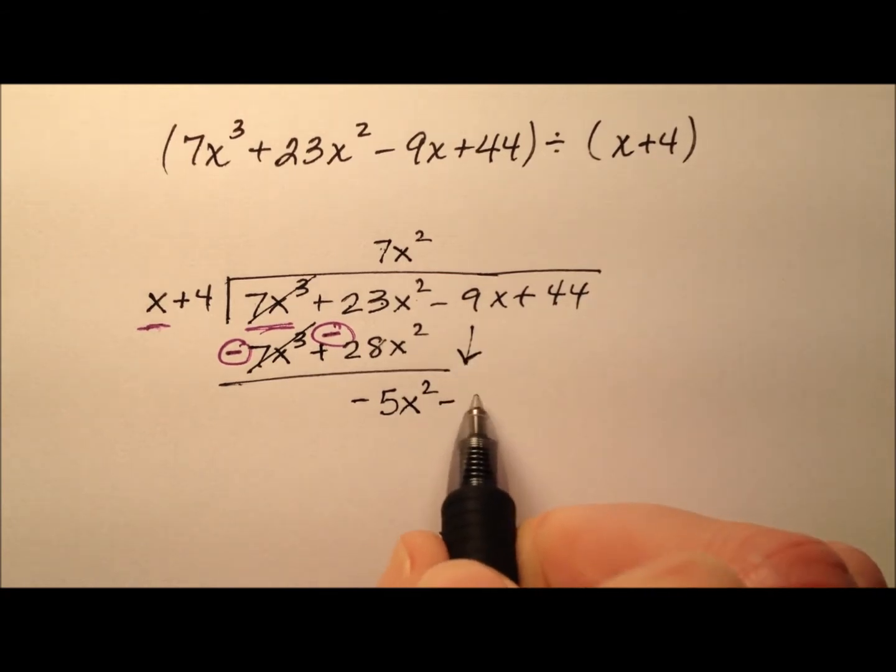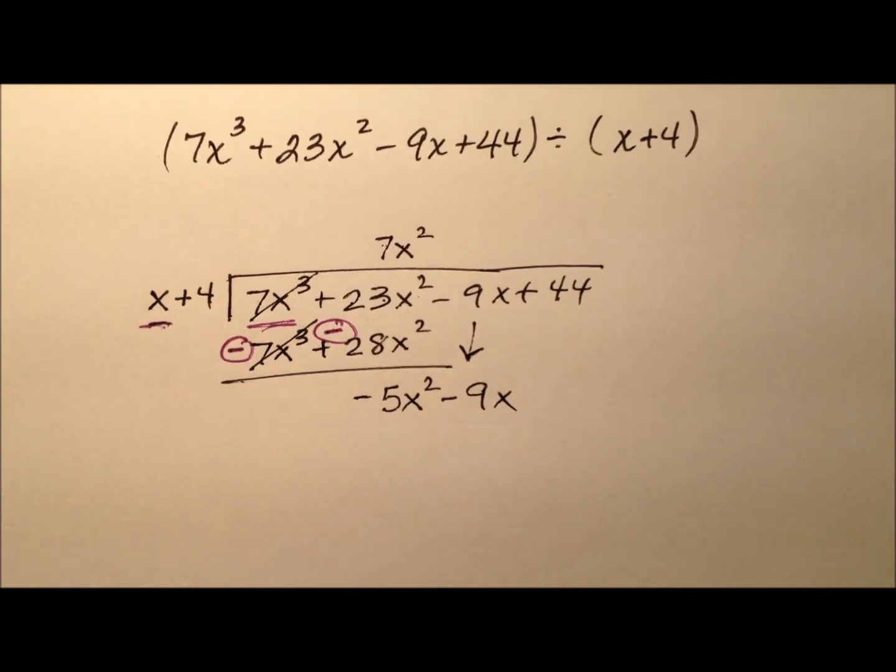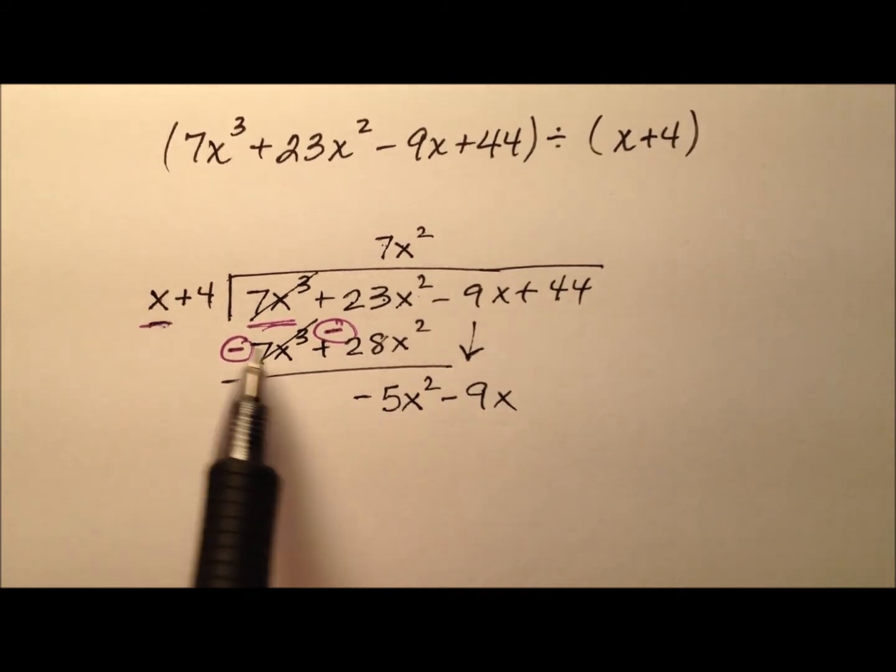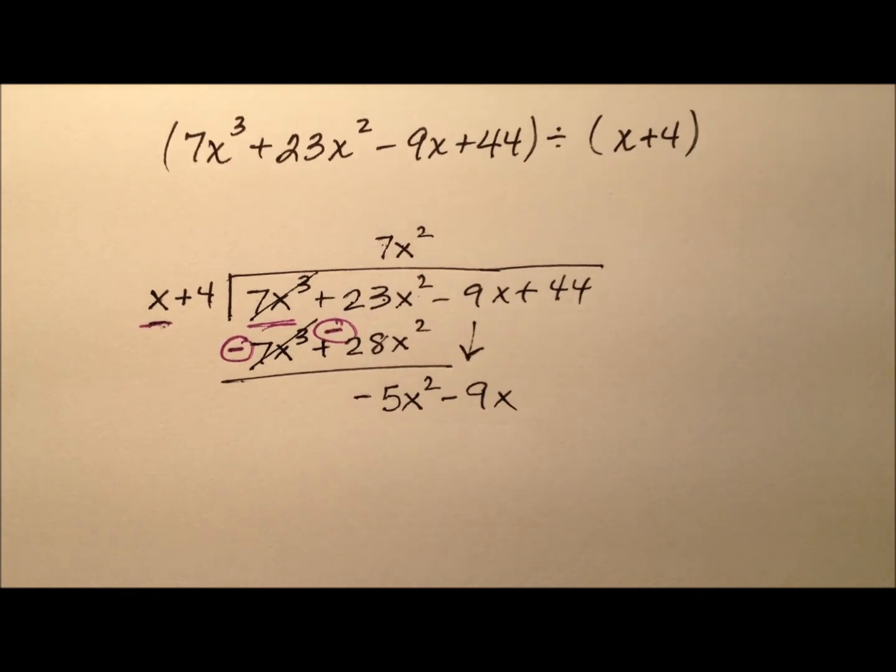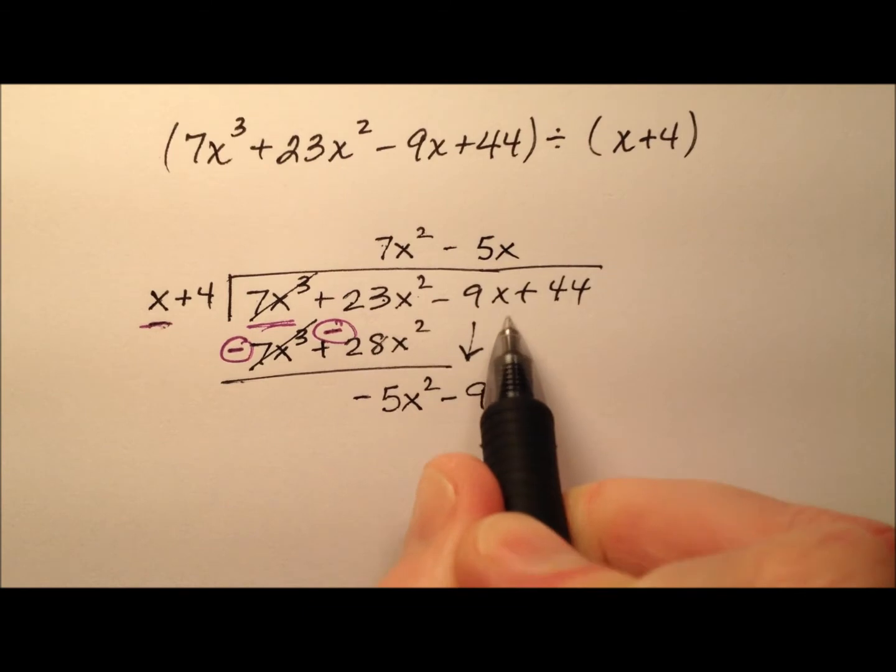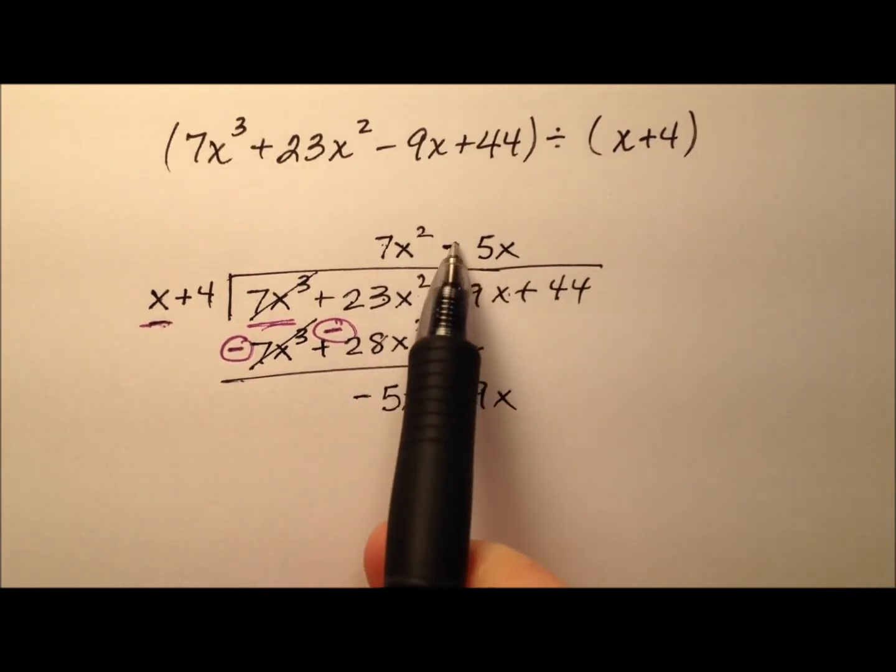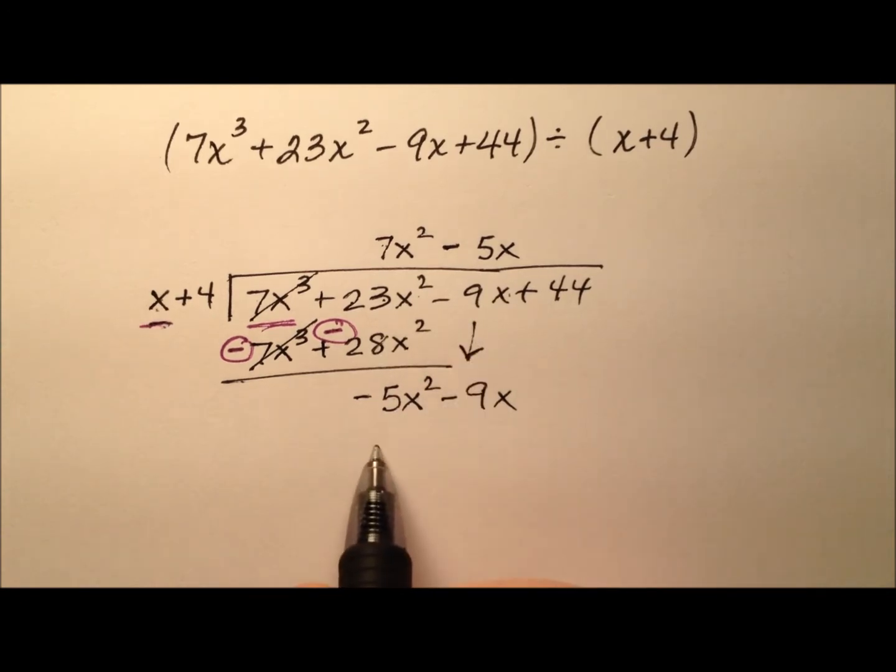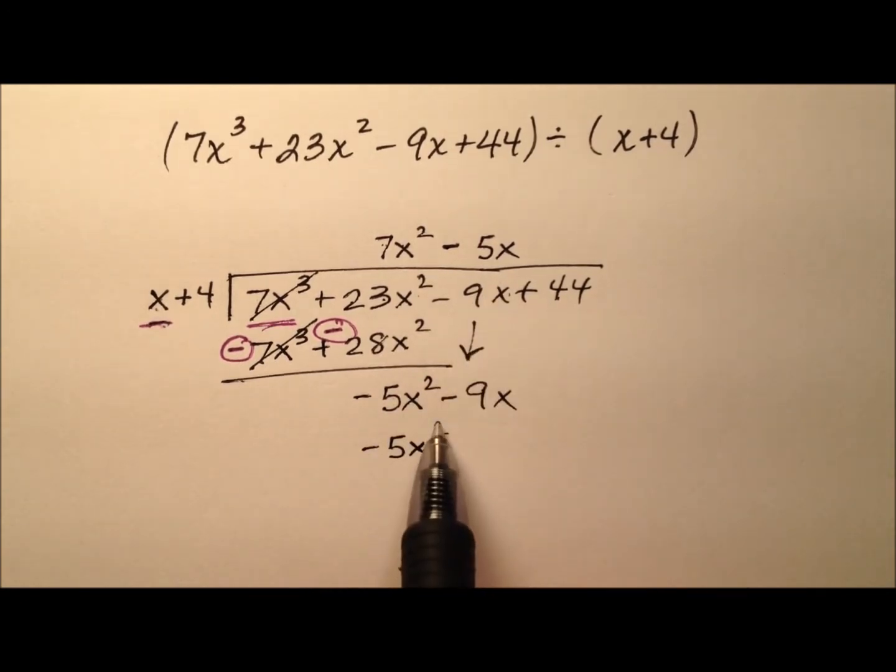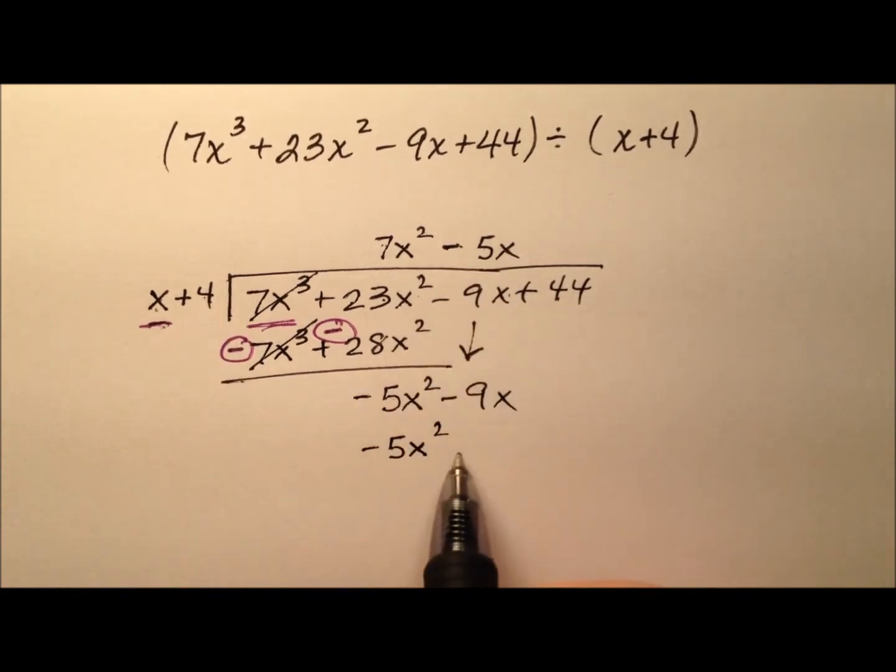And then in our algorithm, the next thing we do is bring down. So let's look at the leading terms again, x and negative 5x squared. What do I have to multiply by x to get negative 5x squared? Well that'll be negative 5x. So let's write that with all those linear terms lining up. So negative 5x times x was my negative 5x squared, but I also have to multiply that by the constant. So negative 5x times positive 4 gives me negative 20x.